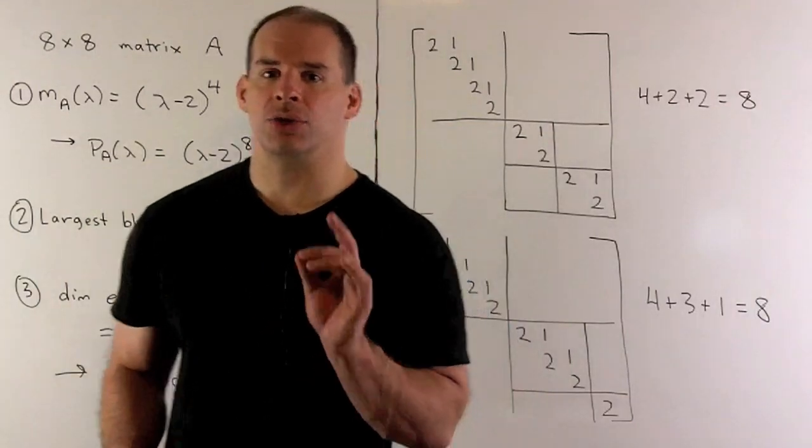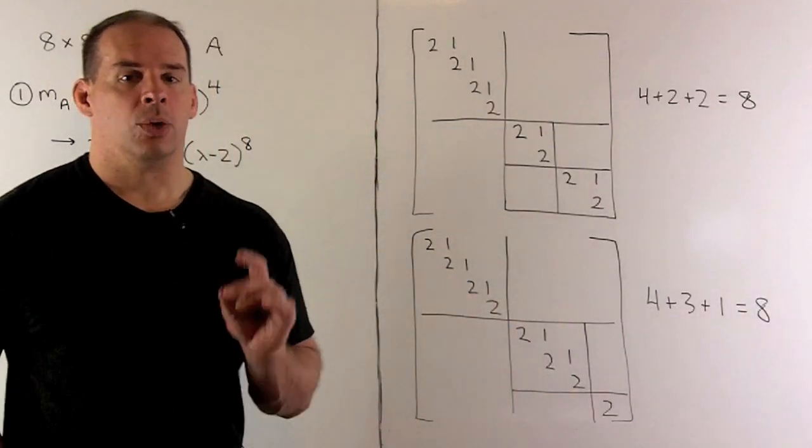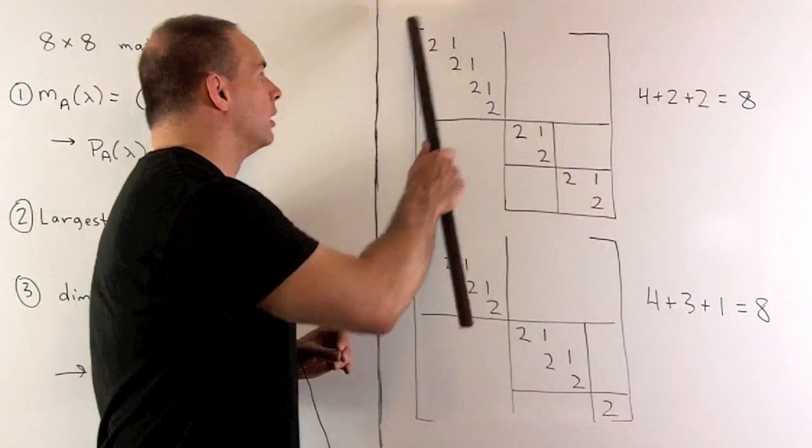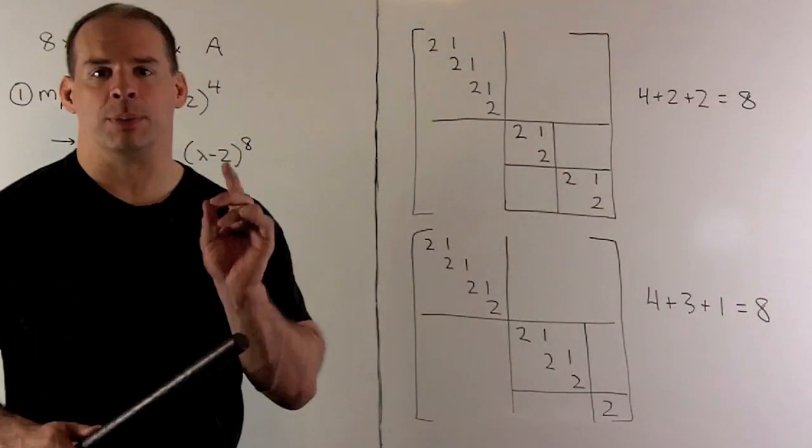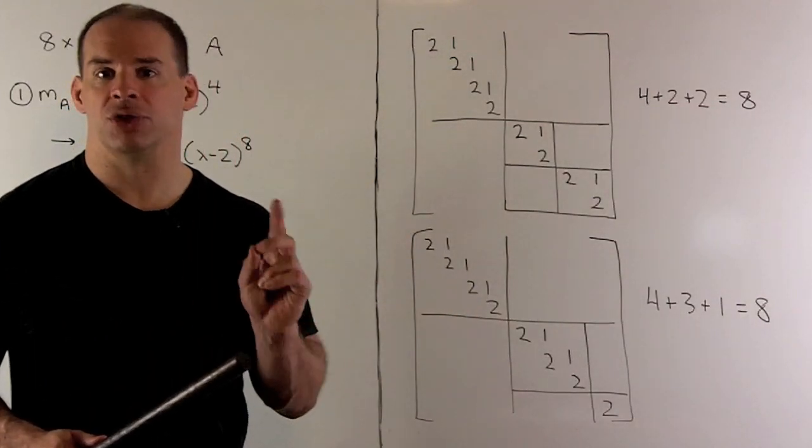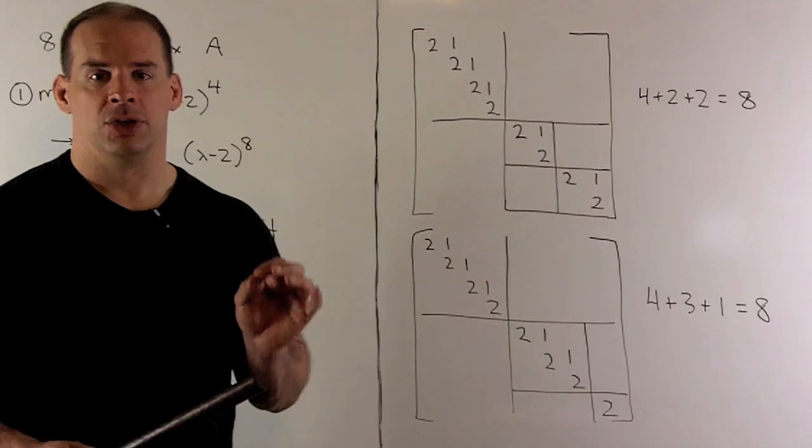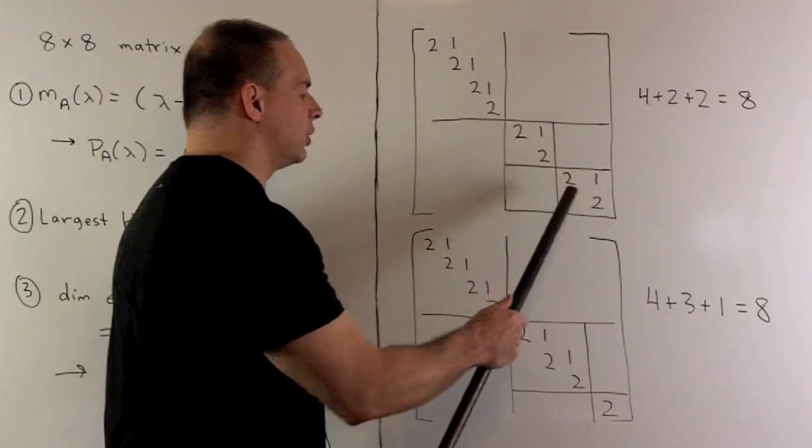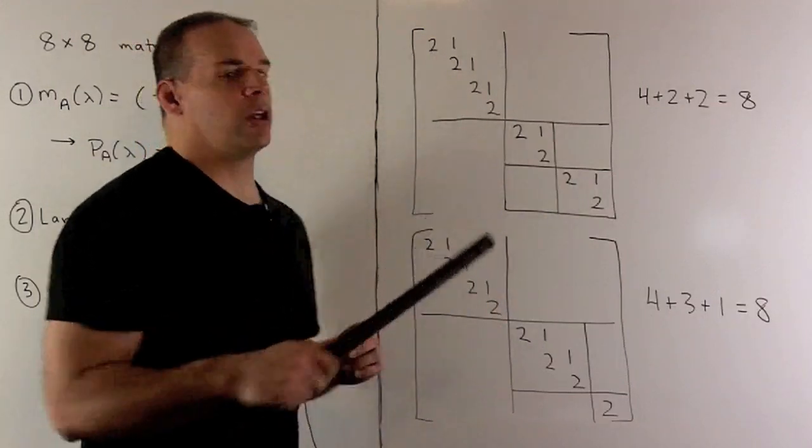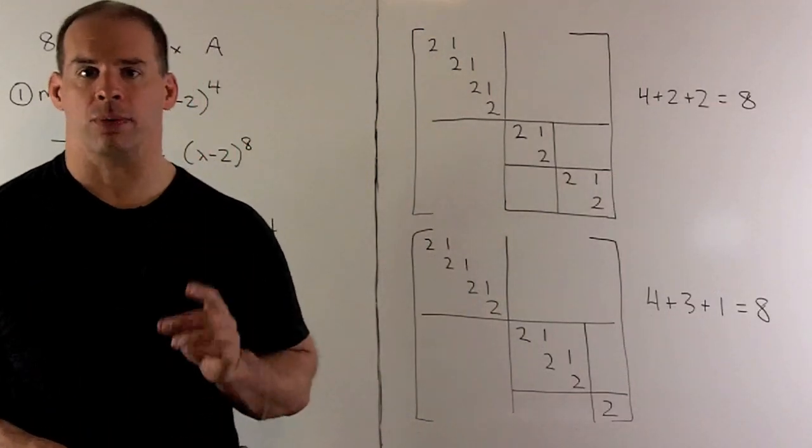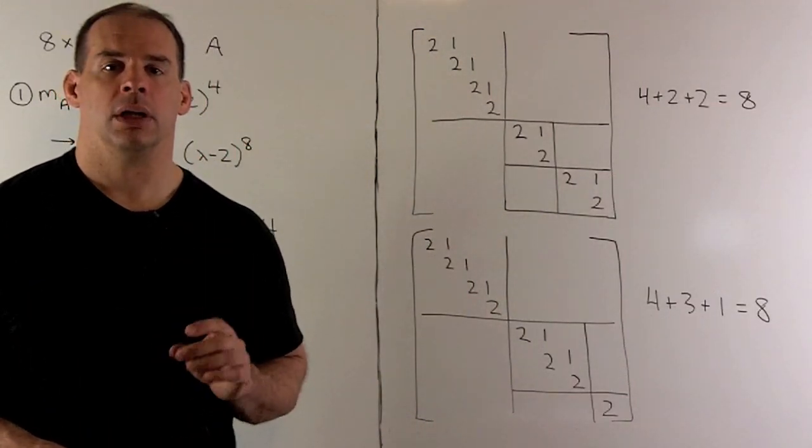Now that narrows things down to two possibilities. We have to have a four-by-four block. That'll leave a four-by-four block, and we have to put two blocks in there to get a total of three blocks. We could do that with two plus two, or three plus one. Note, we arrange the blocks along the diagonal, we're going to count that as the same Jordan form.